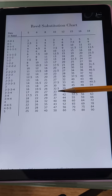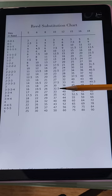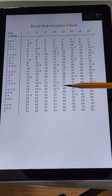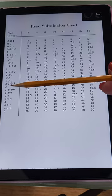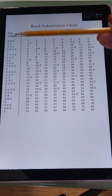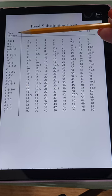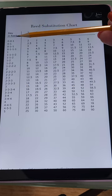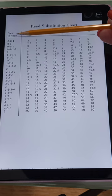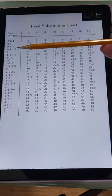Under each number is a column with other numbers progressing from small to large. Those numbers are all the possible ends per inch that you can get from that reed if you slay it in different ways. The next thing you'll notice is a set of numbers in the left-hand column. These numbers tell you how to slay the reed to get the ends per inch.